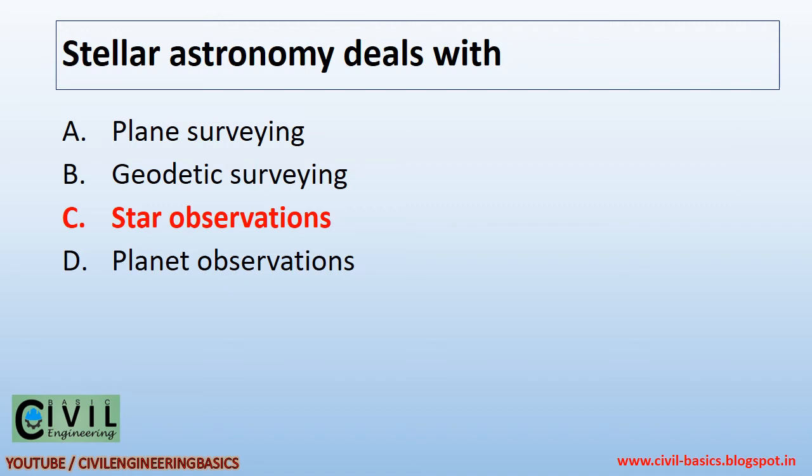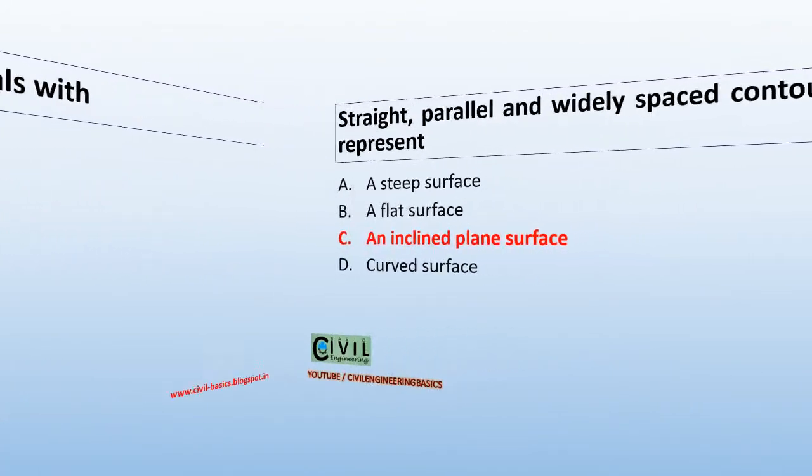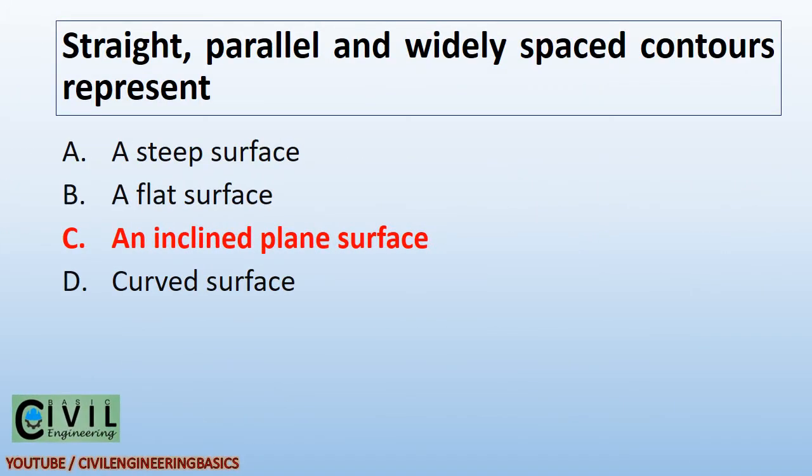Stellar astronomy deals with star observations. Straight, parallel, and widely spaced contours represent an inclined plane surface.